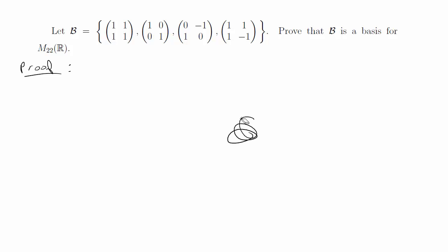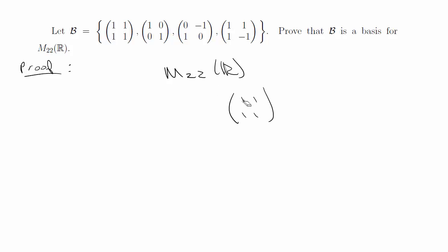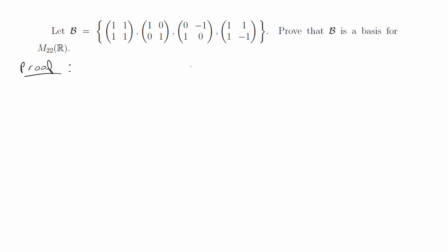This problem is another proof that you would find in a first semester course of linear algebra. It says let B equal the set of four matrices listed here. Prove that B is a basis for M₂₂(ℝ). M₂₂(ℝ) is the notation for any two-by-two matrix with real values on all entries — this could be X, Y, Z, W where those are just real values. To prove this problem you basically just have to know the definition of what a basis is and prove that the given set forms a basis.